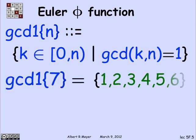So let's look at an example. GCD1 of 7, the numbers that are relatively prime to 7, are all the positive numbers less than 7 because 7 is prime. So it's the set 1, 2, 3, 4, 5, 6.